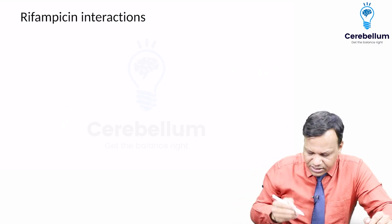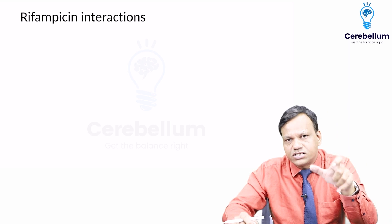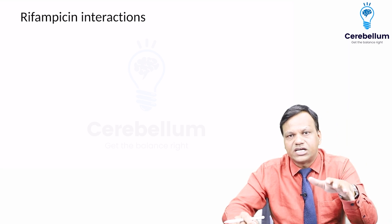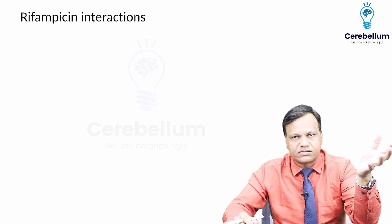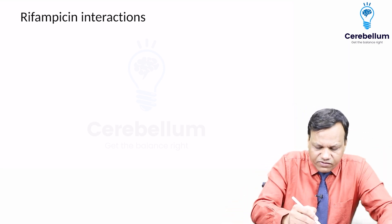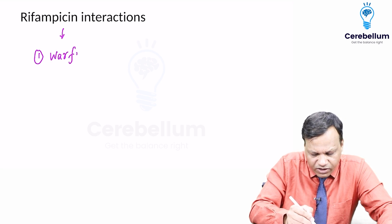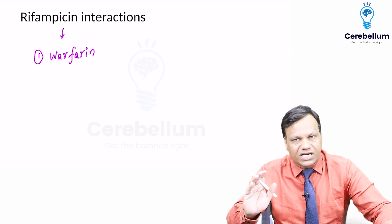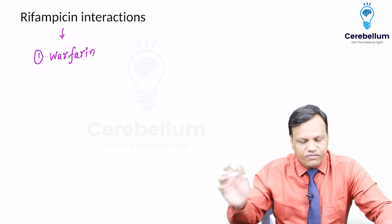Next are the rifampicin interactions. Rifampicin is a strong enzyme inducer. It can increase the metabolism of several drugs — thousands of drugs. Three important ones asked in MCQs: first is Warfarin. Rifampicin increases the metabolism of Warfarin, so we need to increase the dose of Warfarin.